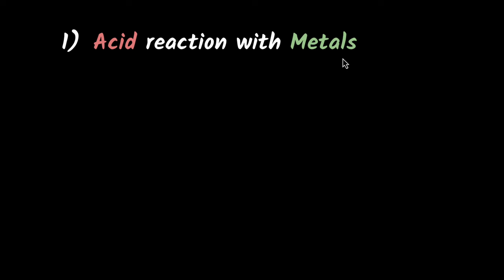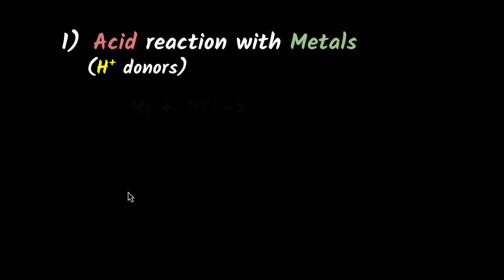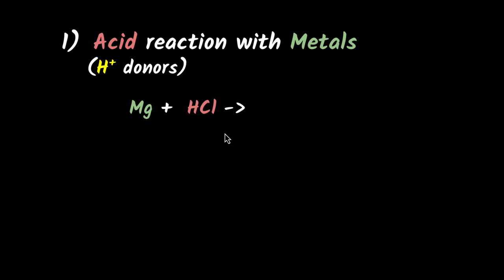To understand acid reactions, just remember one thing: acids are H+ donors, and then everything will make sense. For example, what happens if you have magnesium reacting with hydrochloric acid? Hydrochloric acid, being the acid, donates its H+ ions, and now magnesium can combine with chlorine to form magnesium chloride, and the hydrogen will be liberated. So you get magnesium chloride plus hydrogen gas.